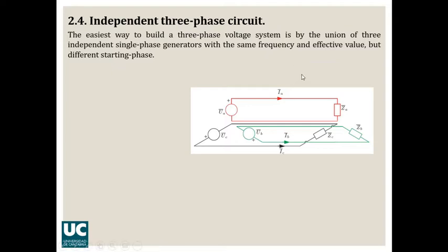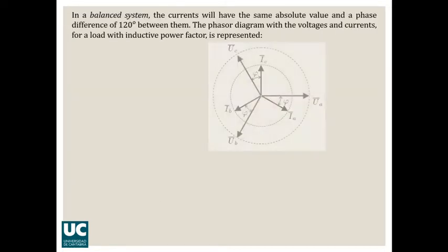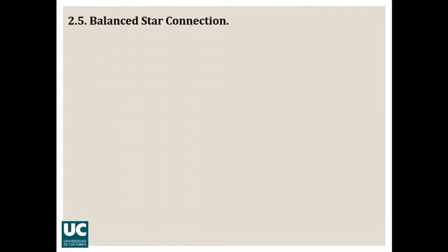However, the problem that you can see here is that we need six independent cables, because we have the phase cable and the neutral cable for each of the three circuits in red, green, and black color. Is there any other way in which we can connect the conductors to have a three-phase circuit? Yes, there are two types of configurations which are quite common, and the first is the balanced star connection.